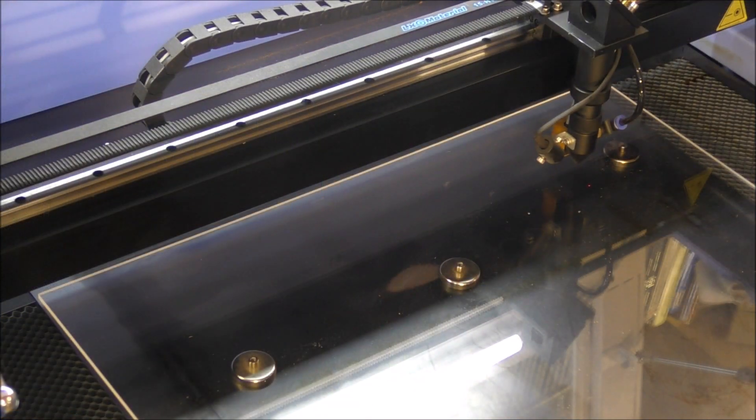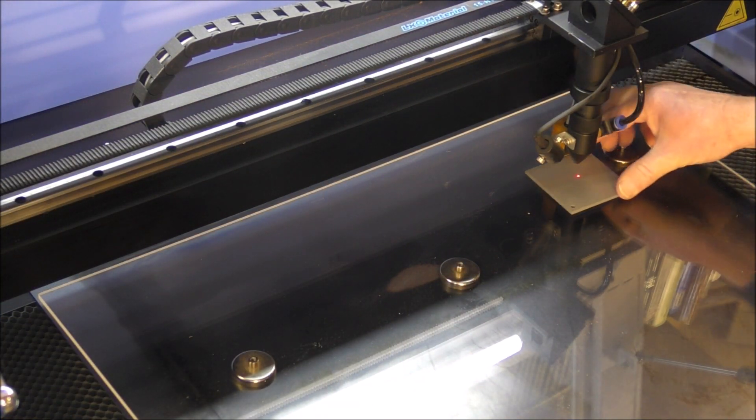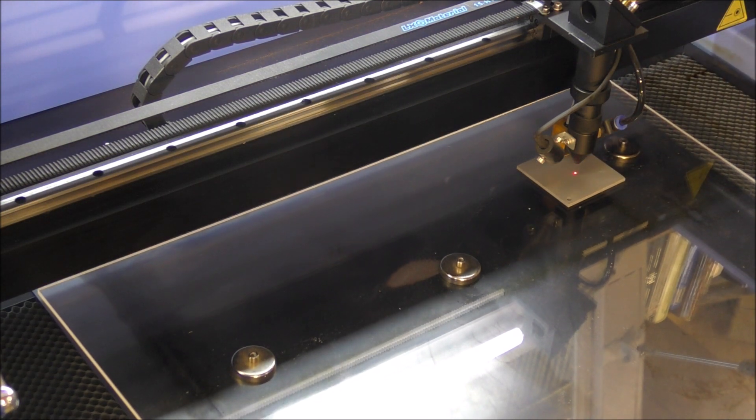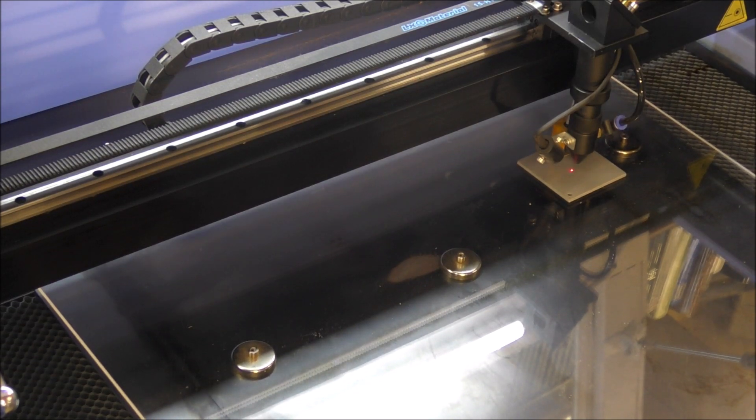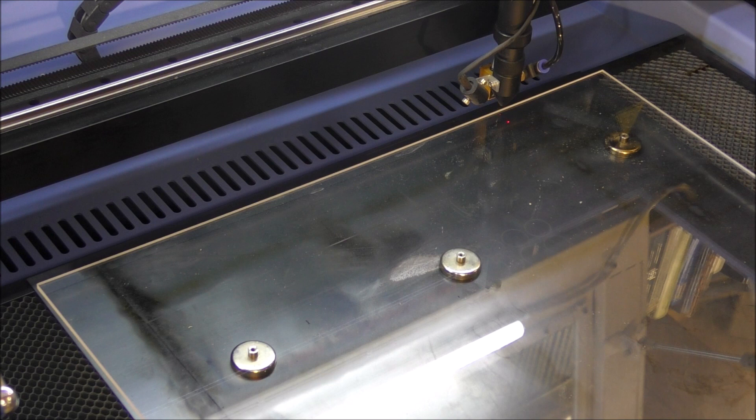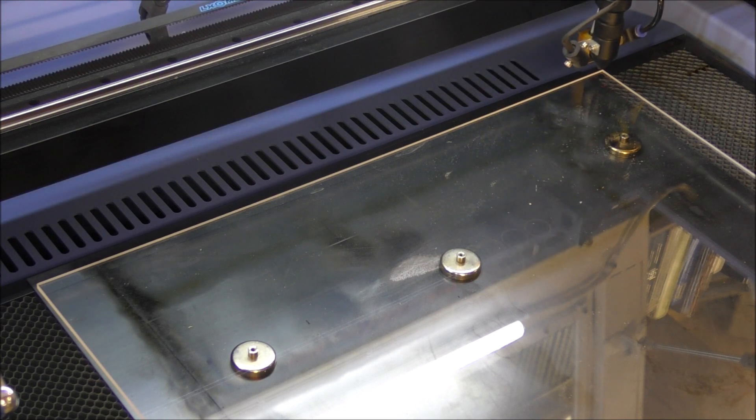We have our plexiglass set up in the laser now. It's on little standoffs there, and this is the piece of material that we put underneath the nozzle. This auto z-height then automatically comes up and registers the correct height for the laser.